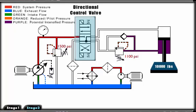Both work ports are routed back to the tank so there is no pressure in the work port lines except between the rod end of the cylinder and the counterbalance valve.